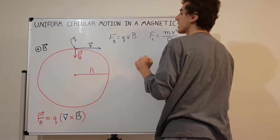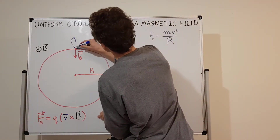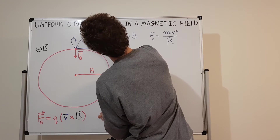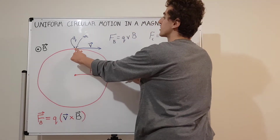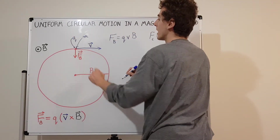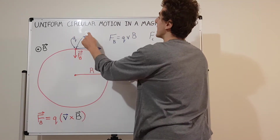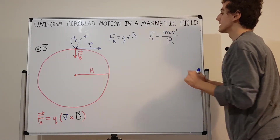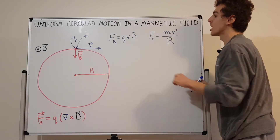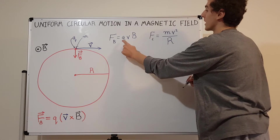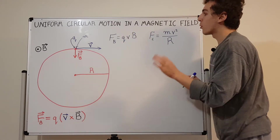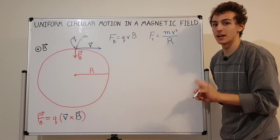This little charge Q also has the property of mass. So this little red dot has Q as its charge and m as its mass — m is the mass and Q is the charge of the particle. This is a point particle in our model.